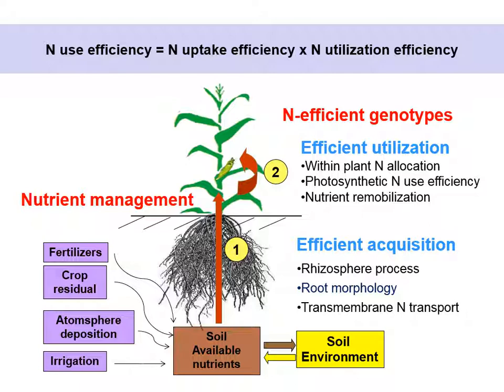Nitrogen use efficiency in crops can be determined by two factors: one is efficient nitrogen application, and the other is efficient nitrogen use within the plants. Today I want to talk about how to increase nitrogen use efficiency by utilizing efficient root systems.